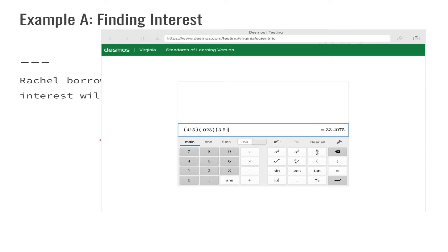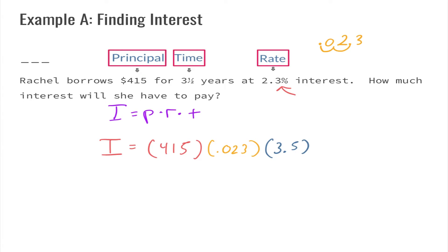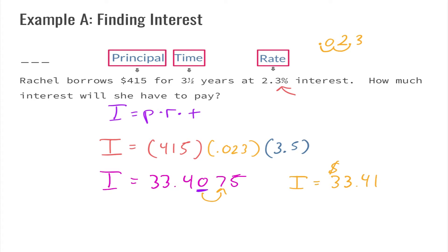It's very important to notice that we have four decimal places, but in our system of money we only have two, so we need to do some rounding. Our interest is thirty-three point four zero seven five. We round to the hundredths place — look next door, five or greater add one more — so our final answer is the interest is thirty-three dollars and forty-one cents. Anytime we have a word problem we need to have a word answer with a money label.